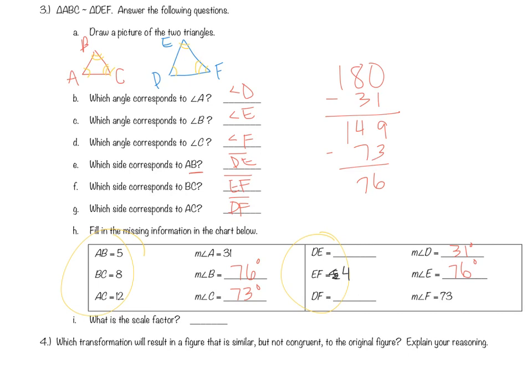So if BC is proportionate to EF, and BC is 8, but EF is 4, that means you're cutting it in half. So AB corresponds to DE, so that means it's going to have to be 2.5. And 12, half of that is 6. So the scale factor is 1 half.